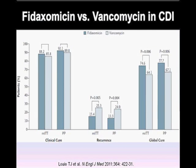This graph illustrates the findings by Louie et al. in a study published in the New England Journal of Medicine in 2011 comparing fidaxomicin to vancomycin in CDI treatment. Fidaxomicin is represented by the dark blue color and vancomycin by the lighter blue color. The left-hand side shows clinical cure is comparable in the two groups, and the right side shows global cure which is also comparable between the two drugs. The center area of the graph shows fidaxomicin distinguishing itself with a significantly lower rate of recurrences of diarrhea compared to vancomycin.